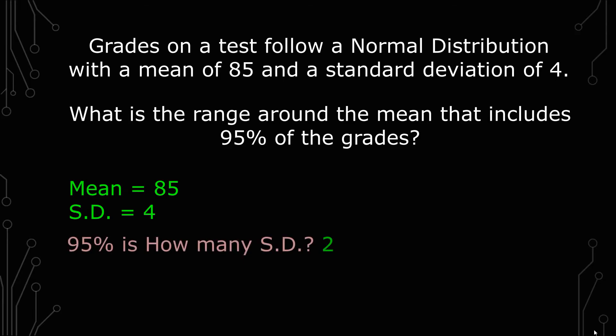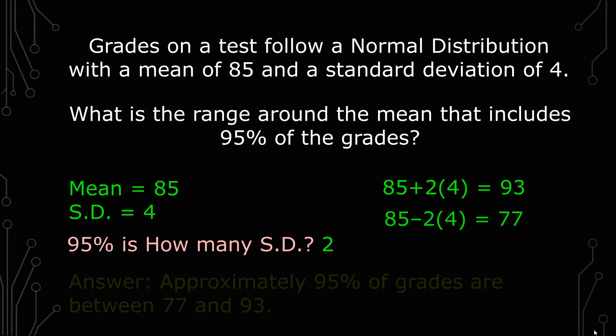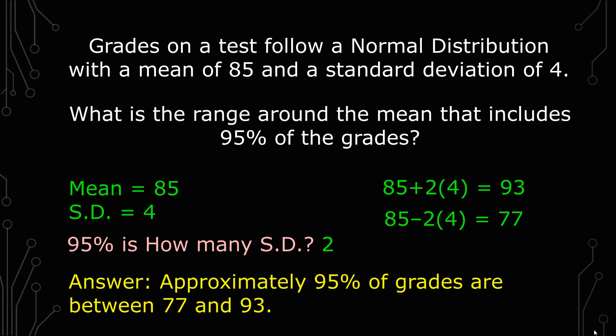And so we have 85 plus 2 times 4 to give us 93. And then we have 85 minus 2 times 4, which is 77. You would say approximately 95% of the grades are between 77 and 93. And so that's the answer for this question. Let's go on to another question.